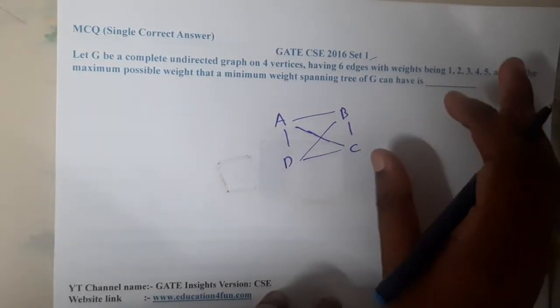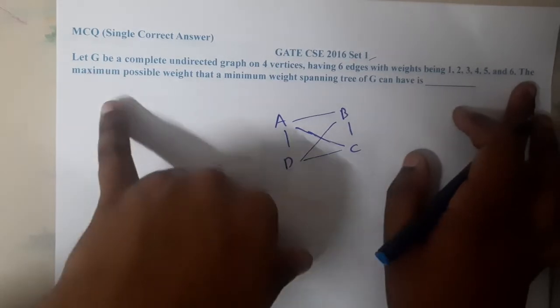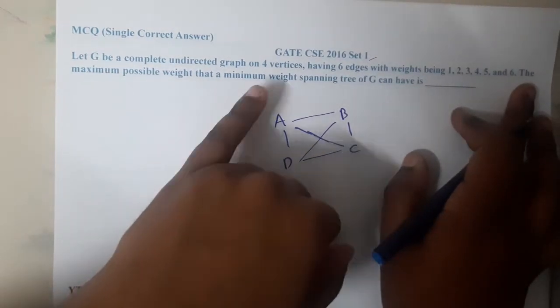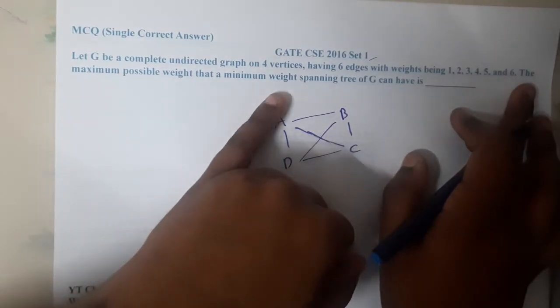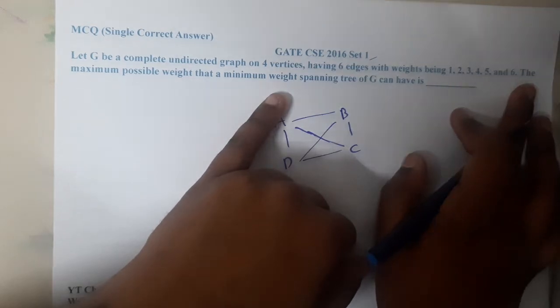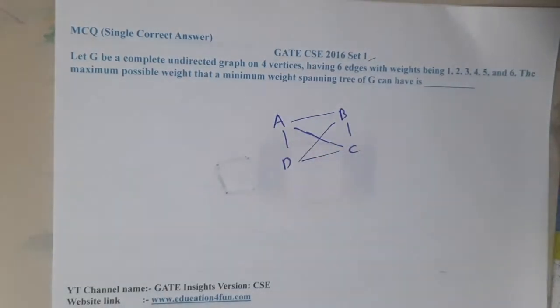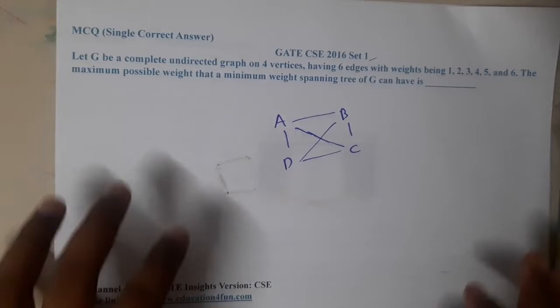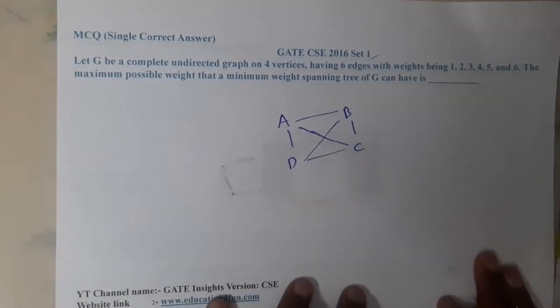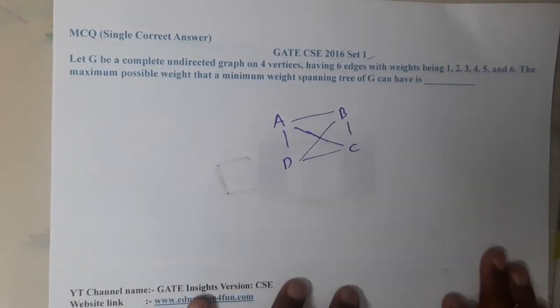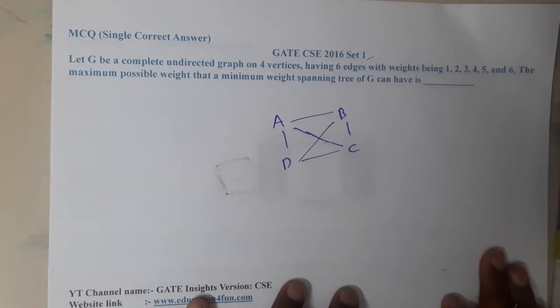The maximum possible weight that a minimum weight spanning tree can have - so here they are asking what will be the maximum weight. Let us try taking some worst cases. One possibility will be, if I take in this way, assume I started one here, I started two here.